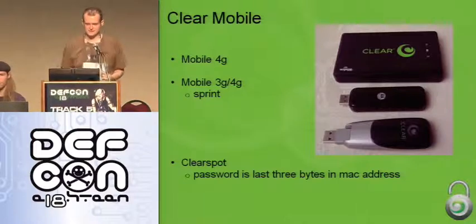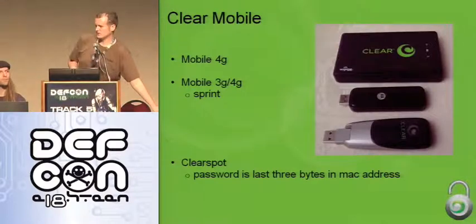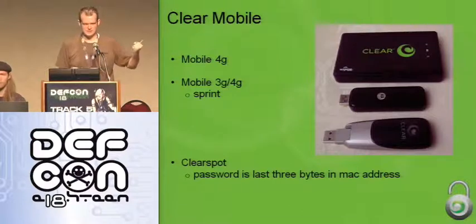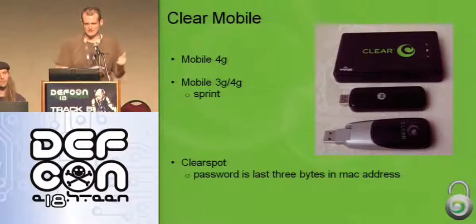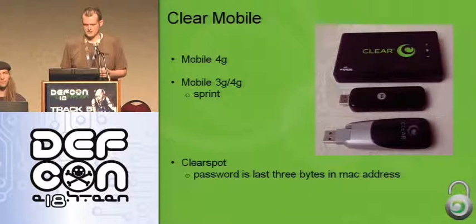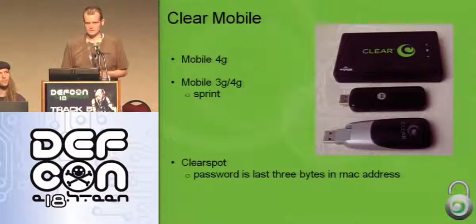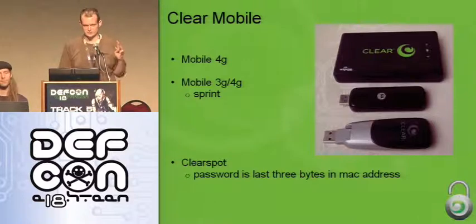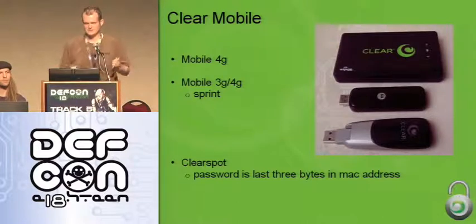The next device at the top is the ClearSpot, which is essentially a wireless access point. You can plug in the mobile device and it will use it to get to the internet and distribute the connection to a local wireless network so anyone can connect in. By default, all the passwords for the ClearSpot — both to log on and to get into the admin interface — are the last three bytes of the MAC address in hex form, so six characters. And you can just see that from the network traffic, so that's not the best default password choice.